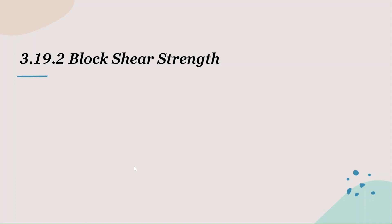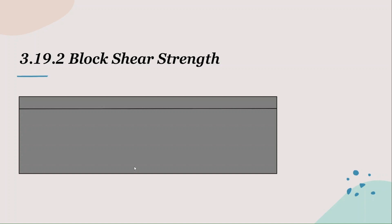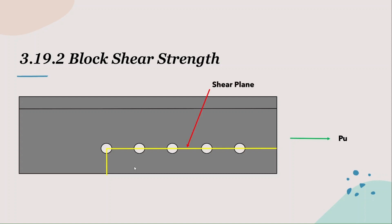To compute block shear strength, we first need to understand the force distribution in the member that is failing due to block shear. This is an angle section in plan view with five holes punched in a single row. When a tension force is applied, this would be the potential fracture plane for block shear. The plane parallel to the line of force undergoes shear — that plane is called the shear plane. The plane perpendicular to the line of action undergoes tension — that plane is called the tension plane.